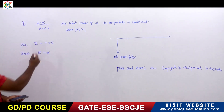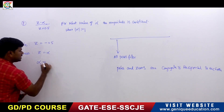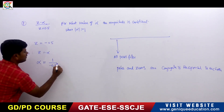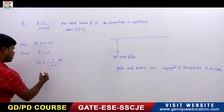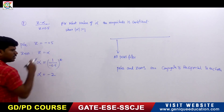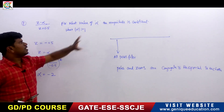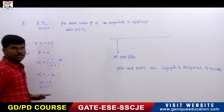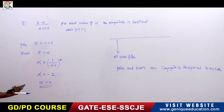According to the all-pass filter property, α must be the conjugate and reciprocal of the pole at -0.5. The reciprocal of -0.5 is -2, and since -2 is a real value its conjugate is -2 itself. So α = -2. Given that |α| > 1, the answer is α = -2.